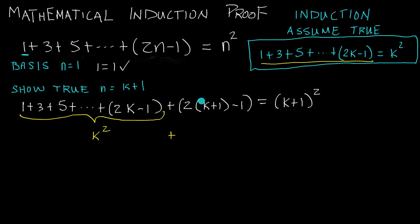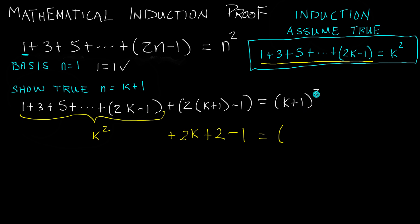This part — 2 times k plus 1 minus 1 — gives us 2k, and distributing the 2 times the plus 1 gives plus 2, and then we have the minus 1. So we have k squared plus 2k plus 2 minus 1. Is that equal to k plus 1 squared? k plus 1 squared is the same as k plus 1 times k plus 1.